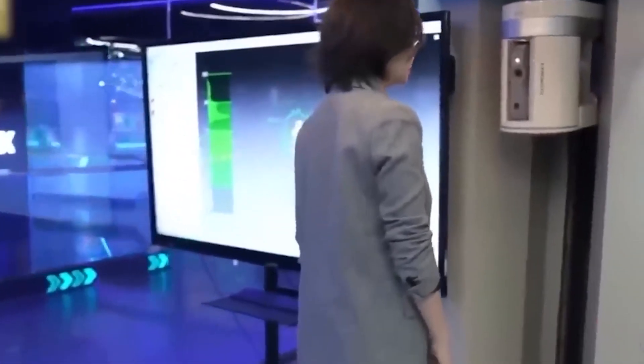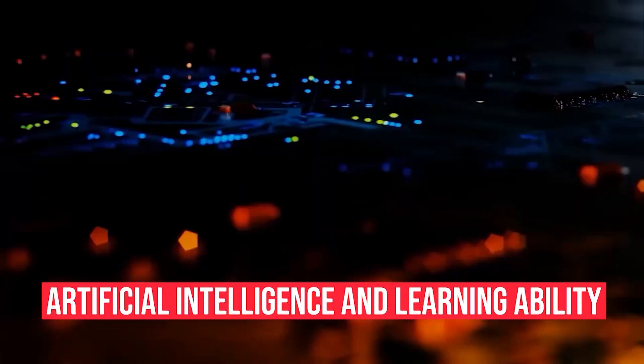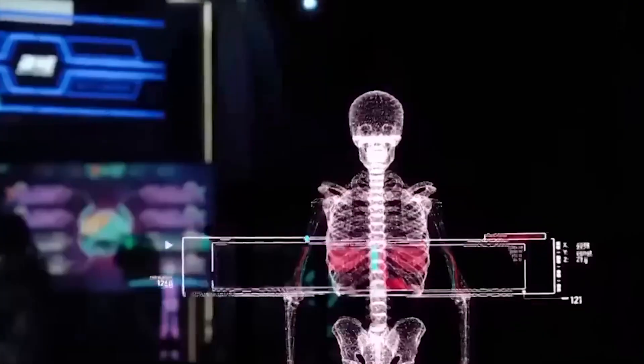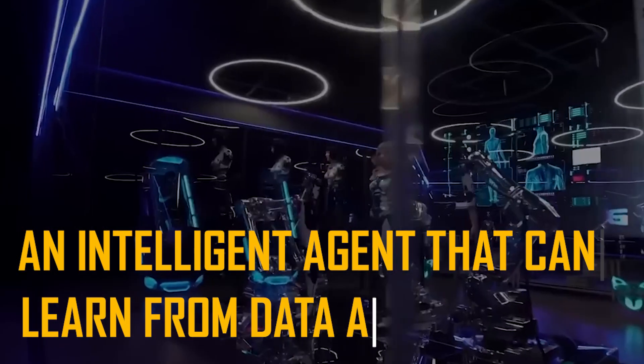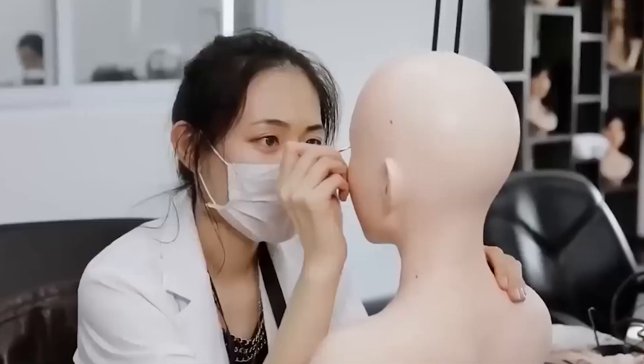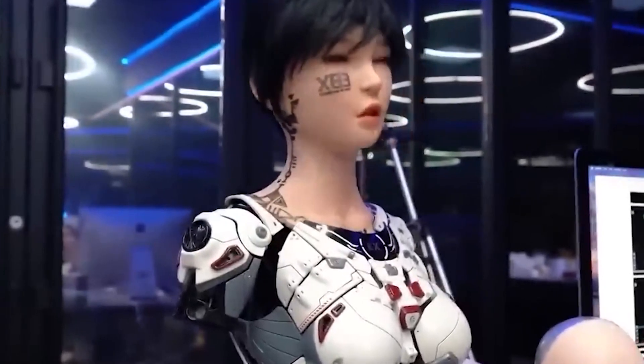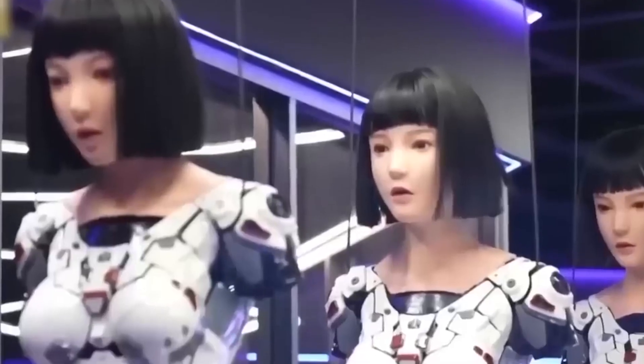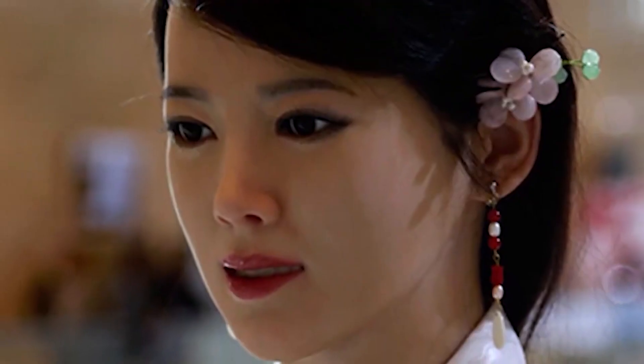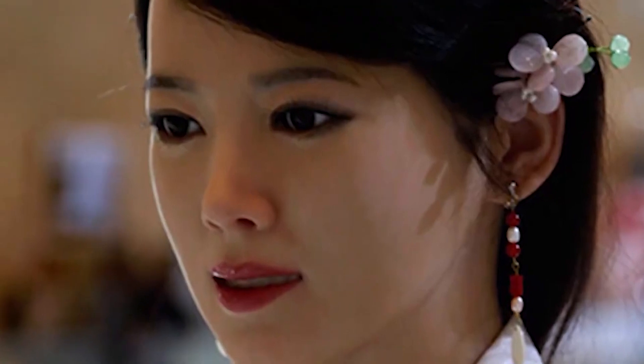A third feature of Jiajia is her artificial intelligence and learning ability. Jiajia is not just a mechanical device, but also an intelligent agent that can learn from data and feedback. She can improve her performance and behavior by analyzing her actions and outcomes. She can also update her knowledge and skills by accessing online information and resources. Jiajia's artificial intelligence and learning ability enable her to cope with changing environments and demands and to achieve higher levels of autonomy and creativity.